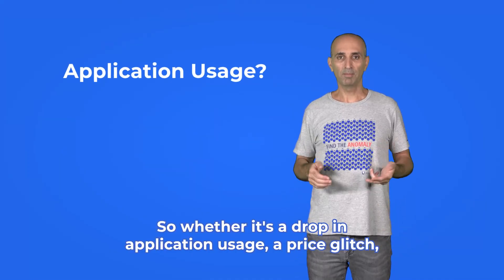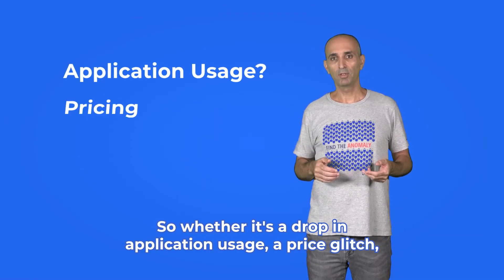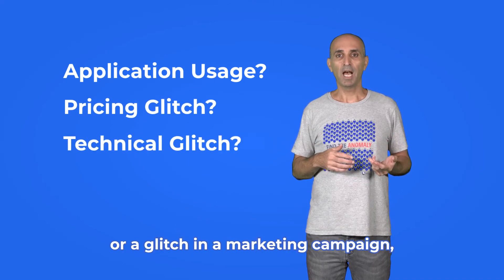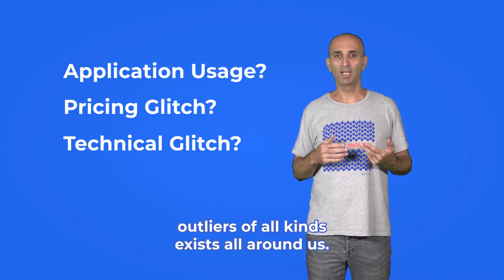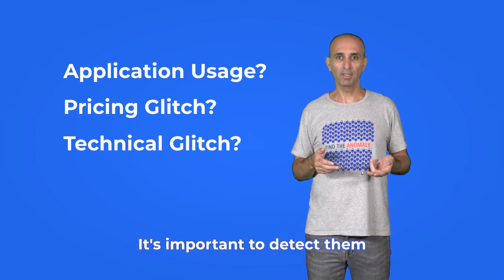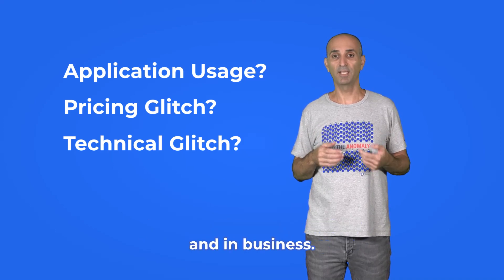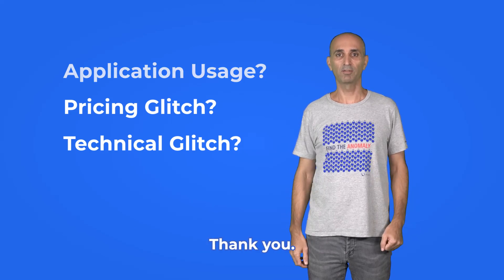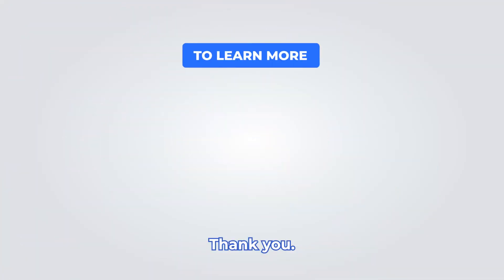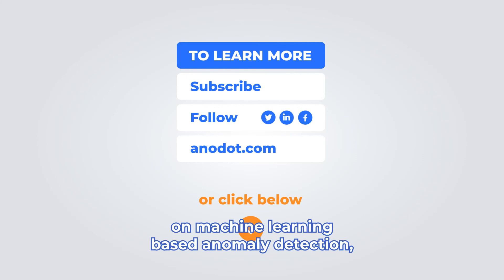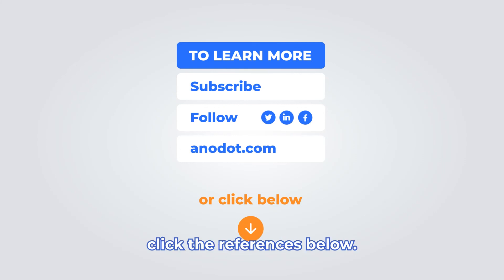So whether it's a drop in application usage, a price glitch, or a glitch in a marketing campaign, outliers of all kinds exist all around us. It's important to detect them because of the impact they have on our day-to-day life and in business. Thank you. For more resources on machine learning based anomaly detection, click the references below.